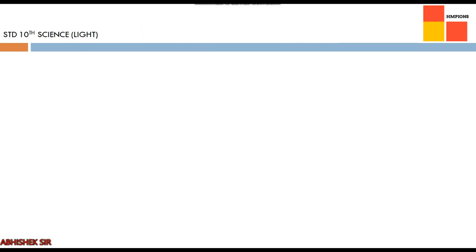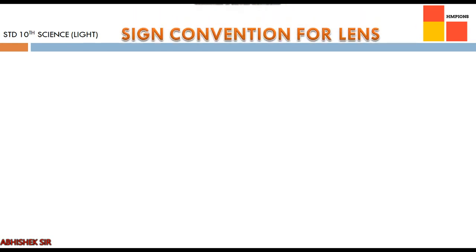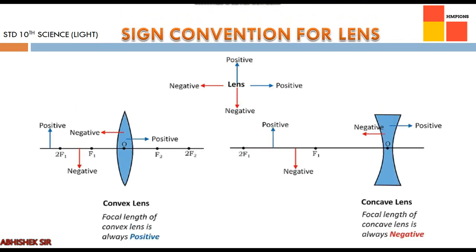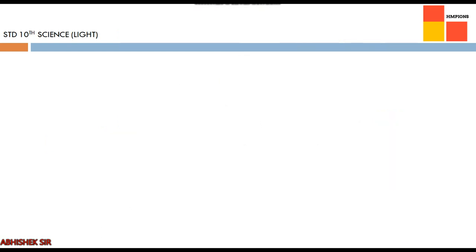Moving on to sign convention for lenses. The same set of rules is followed as for mirrors. The optical center is considered as the origin. Distance measured moving left is negative; moving right is positive. Perpendicularly above is positive; perpendicularly downward is negative. This sign convention is especially important when solving numericals.